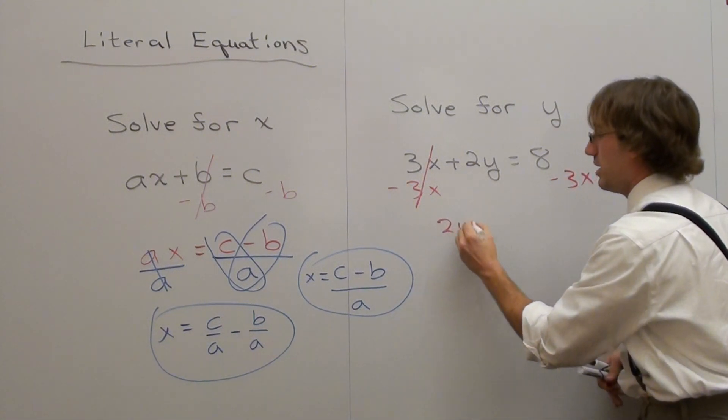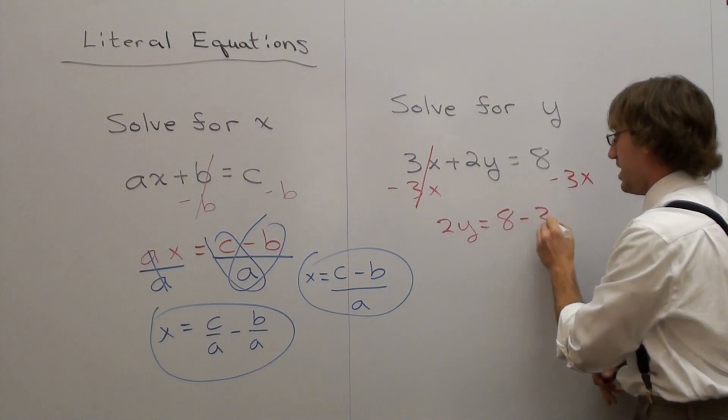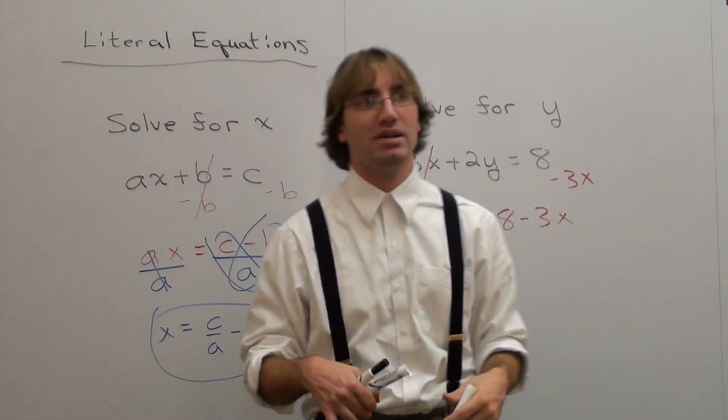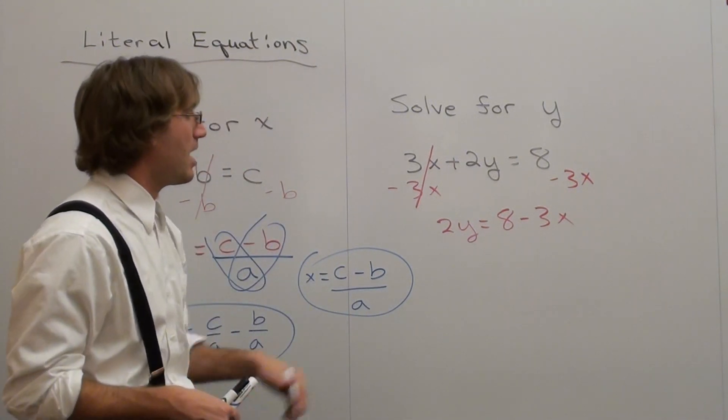3x's cancel out, become 0, not x, not 1, 0. And I'm left with 2y equals 8 minus 3x. It's not 5x, it's not 5, it's 8 minus 3x. You can't combine them because one is an x, the other is just a constant.